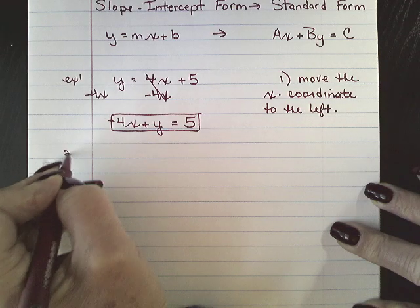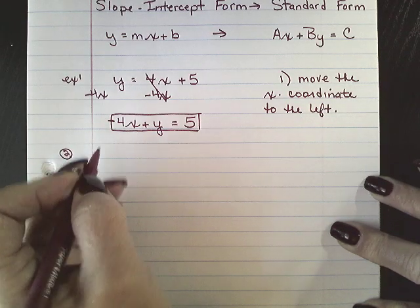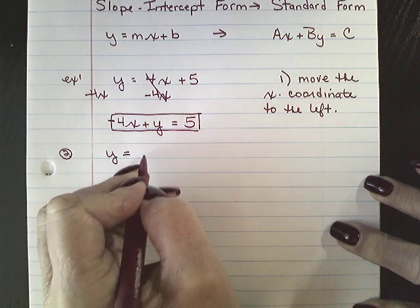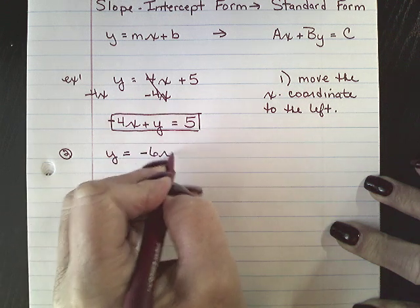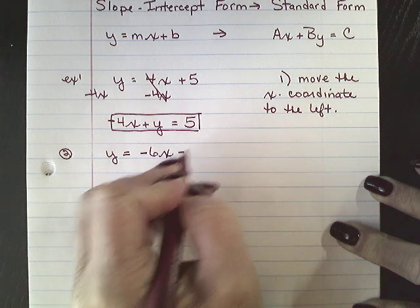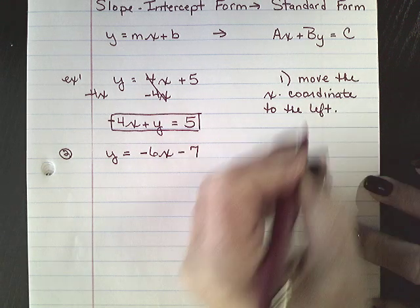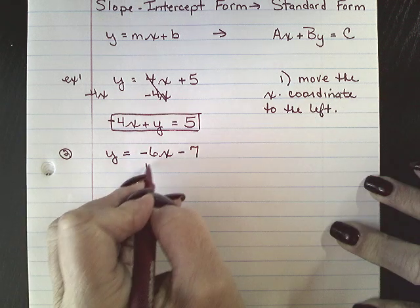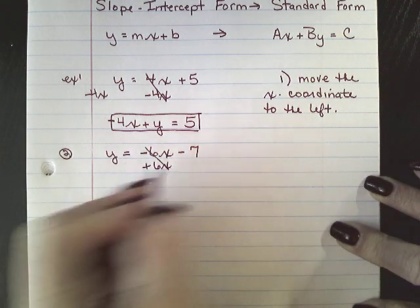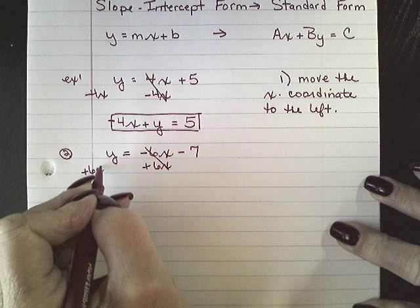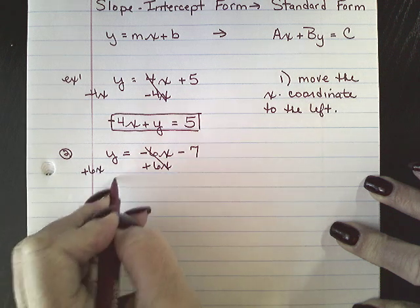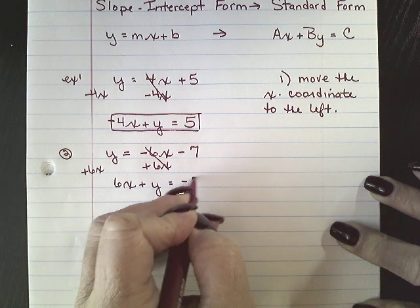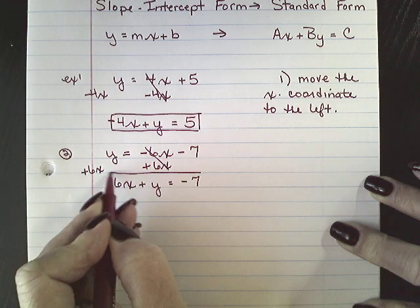Okay, so try that again. We're going to have y equals negative 6x minus 7. So again, I'm only going to move my x-coordinate to the left. I'm going to add 6x. So I will have 6x plus y equals negative 7. And you are done.